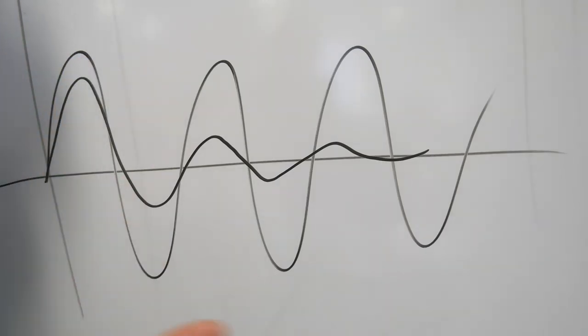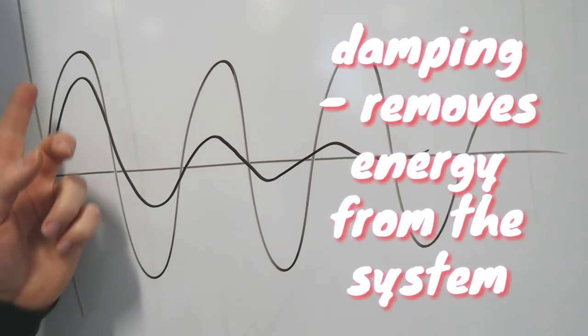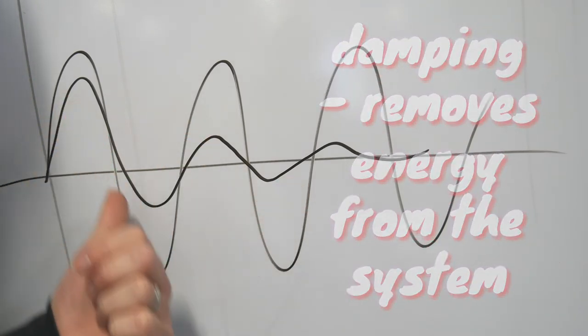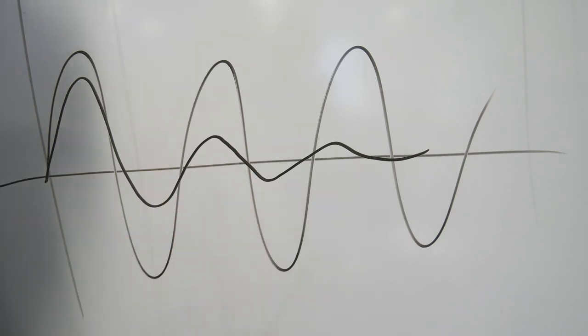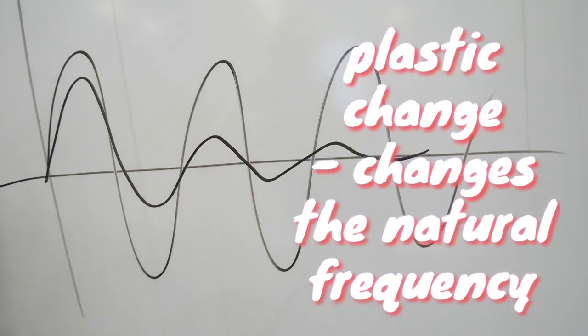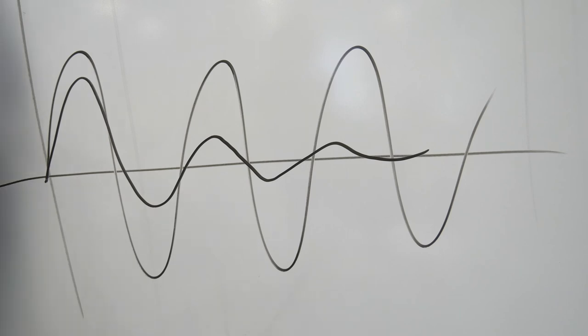So there's two ways to solve problems with resonance. One is to damp the thing, and so you're going to decrease the amplitude by taking the energy out of the system. And the other is to make a drastic change, so hence change its natural frequency.